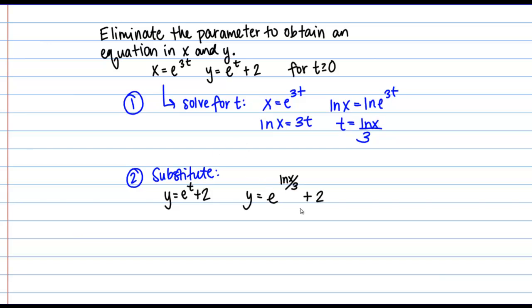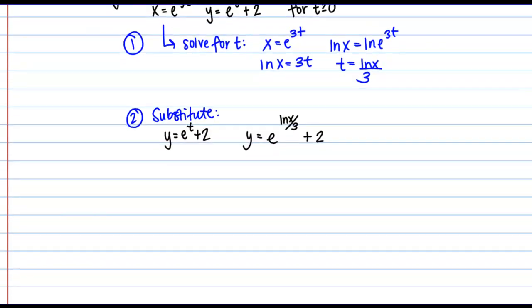So in this case we can simplify this a little bit. So let's go ahead and work on that. E, I can write this as 1 3rd natural log of x. And the reason I do that is because I am going to now write this as e to the ln x to the 1 3rd power.